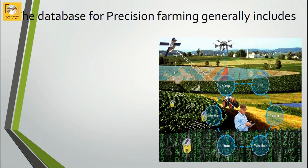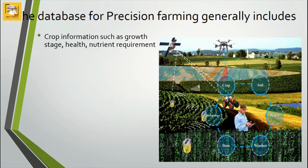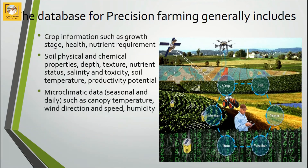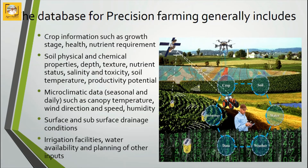To apply a particular technology in precision farming, we need a prior database to analyze the features of the plot or farm and get an exact understanding of that field. The source database for precision farming generally includes: crop information such as growth stages, health, and nutrient requirements; soil physical and chemical properties like soil depth, texture, nutrient status, soil density, soil temperature, and productivity potentials; microclimatic data such as canopy temperature, wind direction, wind speed, and humidity; surface and subsurface drainage conditions; and irrigation facilities including water availability and planning of other inputs.